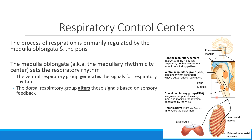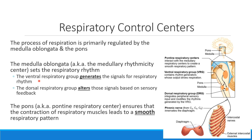The dorsal respiratory group helps us to change either how deeply or how shallowly we're breathing by altering the signals that the ventral respiratory group creates. In addition to creating and altering the signals, we also use what's called the pons — that upper structure — with its pontine respiratory center to smooth out the process of breathing.